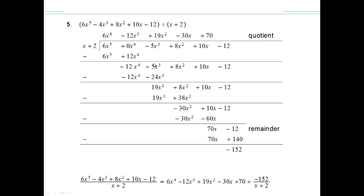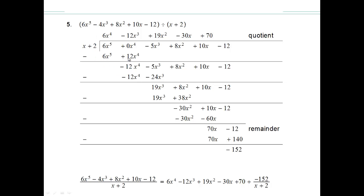This next question I've done for you — we're just going to walk through it to make sure you understand. So x times 6x to the fourth gives 6x to the fifth. 6x to the fourth times 2 gives 12x to the fourth. That number times all of that is this polynomial. Once you have that, remember you're going to subtract. Make sure the subtraction sign goes all the way through — that will become a minus and that will become a minus. So that minus that gives you 0. 0x to the fourth minus 12x to the fourth gives negative 12x to the fourth.